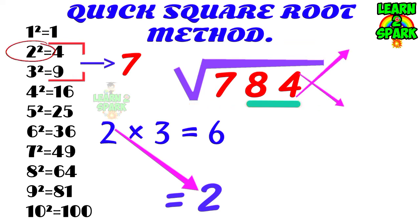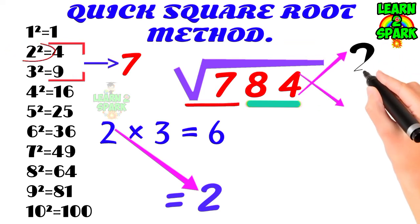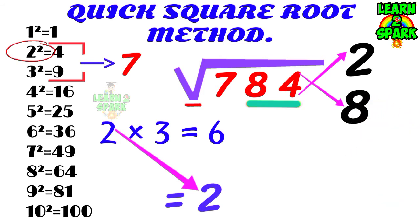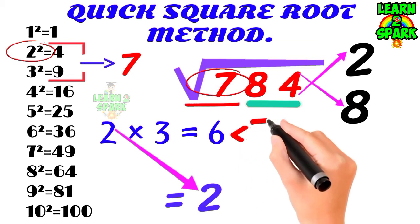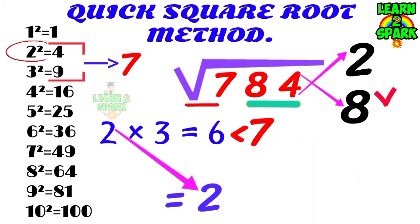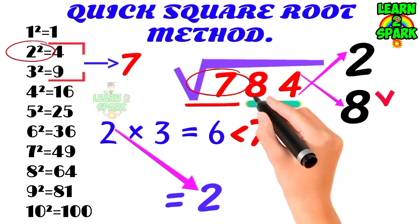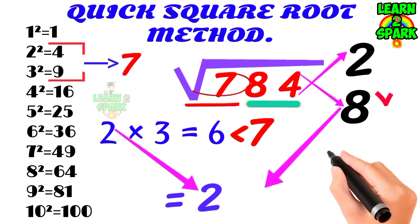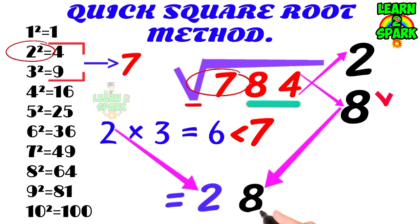Then consider the units place that is 4 here, which might come from the squares of 2 and 8. Now which one will come down for your final answer? You have to consider the first group containing 7. As 7 is greater than the last multiplication result that is 6, you have to consider the greatest number 8 and take it down for your final answer. So the required root is 28.